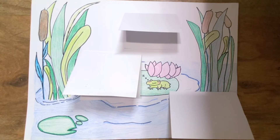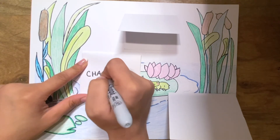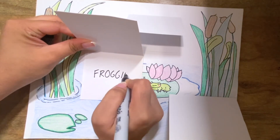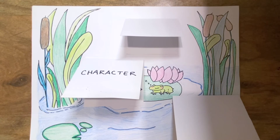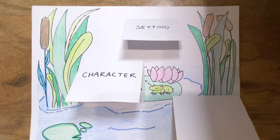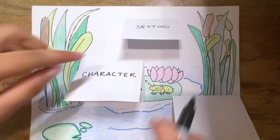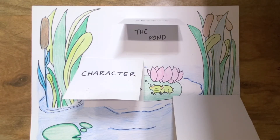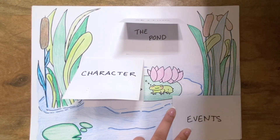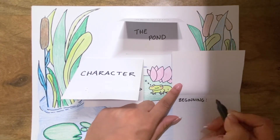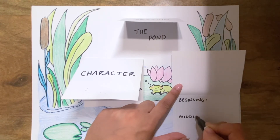Now on the piece of paper next to where Froggy is, write the word character on the top of the fold. On the inside, we will write Froggy. On the piece of paper in the middle of your drawing, write the word setting. On the inside of the paper, write the words the pond. On the last piece of paper, write the word events. On the inside, write beginning, middle, end.